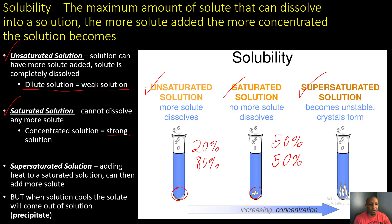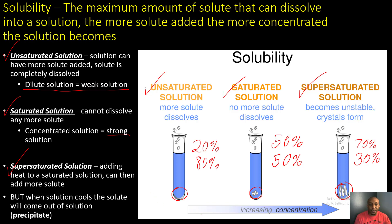Then we look at our supersaturated solution. It has a lot more solute than solvent — we can tell by looking at the large amount of solute at the bottom, making it about 70% solute to 30% solvent. It becomes unstable and crystals form at the bottom. We can add heat to allow more solute to dissolve, but when it cools down, the solute comes out of solution and turns into a precipitate. As we go further along, there is increasing concentration — more solute to solvent.